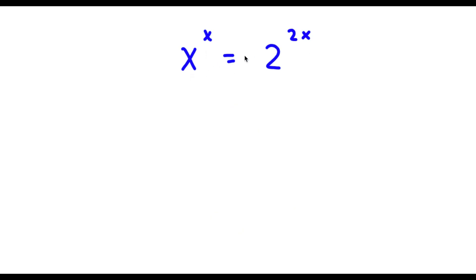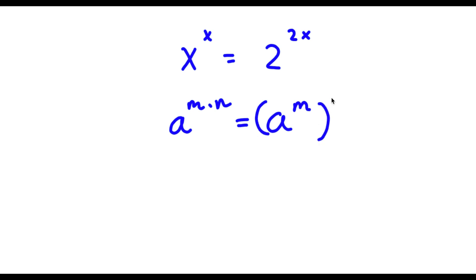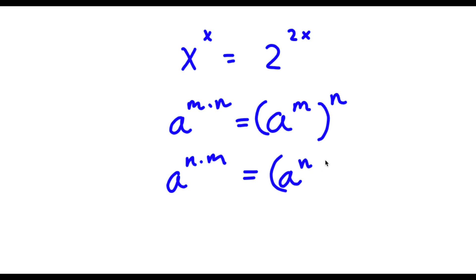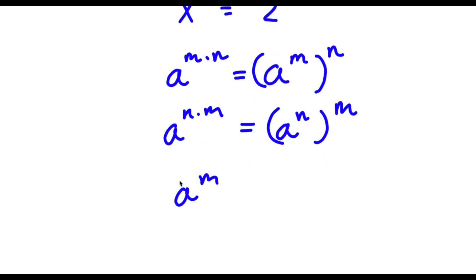Alright, so I have x to the power of x is equal to 2 to the power of 2x. Now if I have something in the form a to the power of m times n, this is the same thing as a to the power of m to the power of n. And if I have a to the power of m to the power of n, we know that's the same as a to the power of n times m — m and n are interchangeable. So a to the power of m to the power of n is equal to a to the power of n to the power of m.